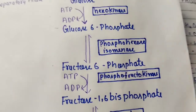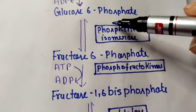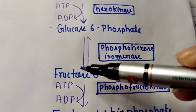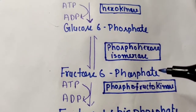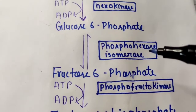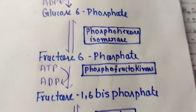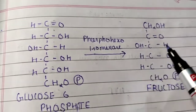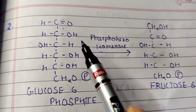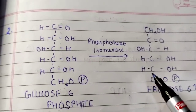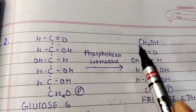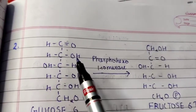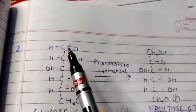The next step converts glucose-6-phosphate using the enzyme phosphohexose isomerase. Isomerase changes the structure — it converts glucose-6-phosphate into fructose-6-phosphate. The isomerase enzyme changes the arrangement: a ketone group is added while the rest of the structure remains the same. Here the phosphate position and carbon-OH groups are rearranged, and a double bond is formed, converting the aldose glucose into the ketose fructose.